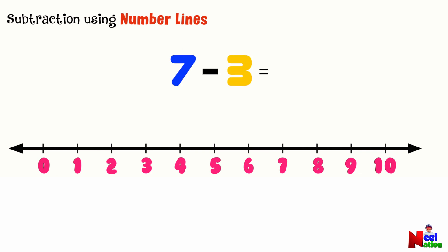Can you tell me what 7 minus 3 is using a number line? Let's start by locating the bigger number on the number line. Which is the bigger number? 7. There you go.